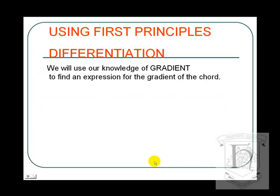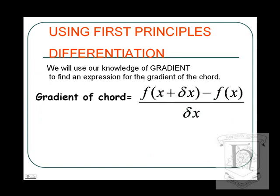So, using first principles differentiation, we will use our knowledge of gradient. The gradient of a straight line is the difference in the y's over the difference in the x's. So, the gradient of our straight line, which is called a chord, is also the difference in the y's over the difference in the x's.